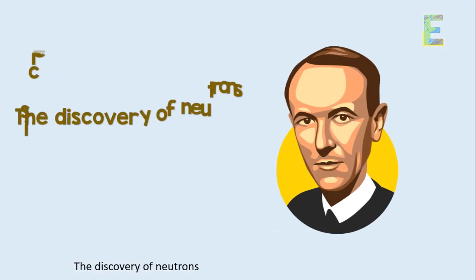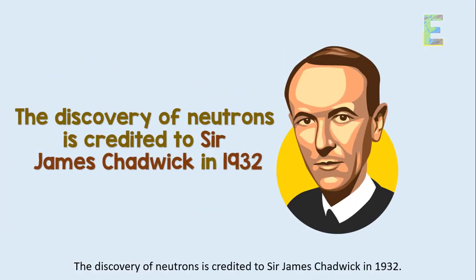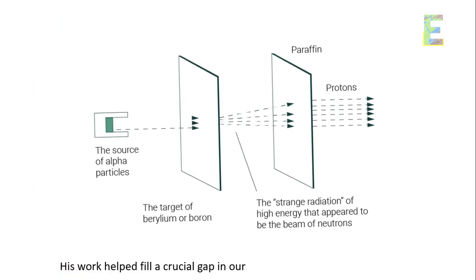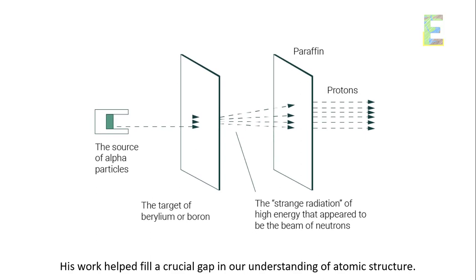Neutron discovery. The discovery of neutrons is credited to Sir James Chadwick in 1932. His work helped fill a crucial gap in our understanding of atomic structure.